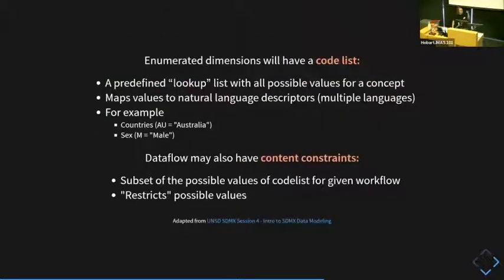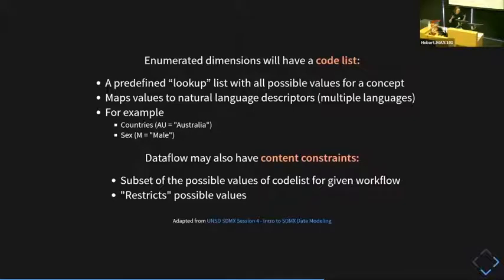Enumerated dimensions will have a code list — a predefined lookup list of all possible values that some column can have. It also maps these codes to natural language descriptors, and you can have multiple languages. For example, AU equals Australia. You can also have something called content constraints for a data flow, which specifies what kind of data you can actually find within a data flow — usually specifying some subset of possible values from a code list.